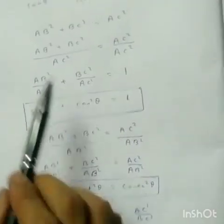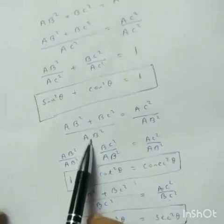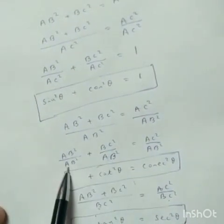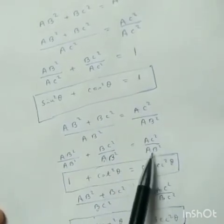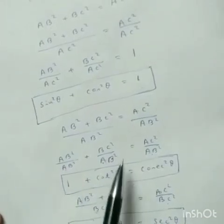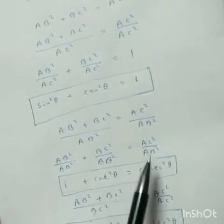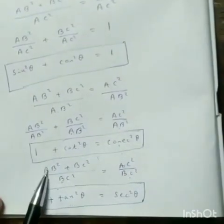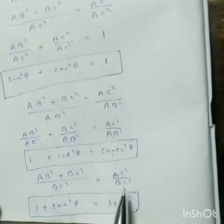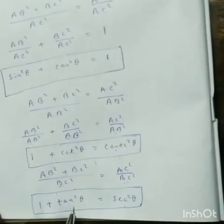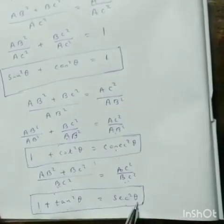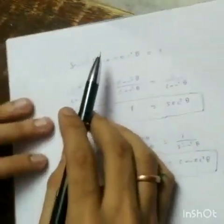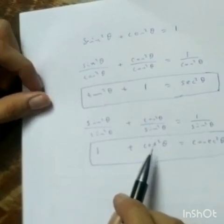Similarly, starting from AB squared plus BC squared equals AC squared, dividing both sides by AB squared, we get AC squared by AB squared. This gives us the identity 1 plus cot squared theta equals cosec squared theta.